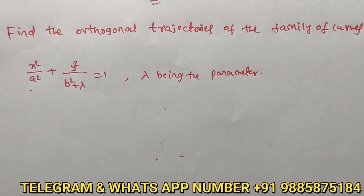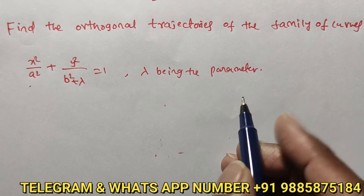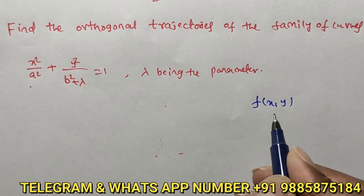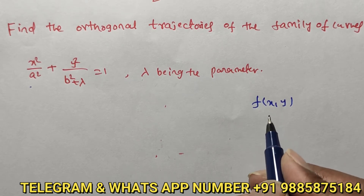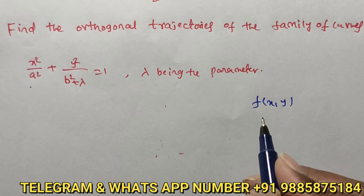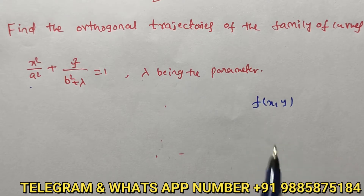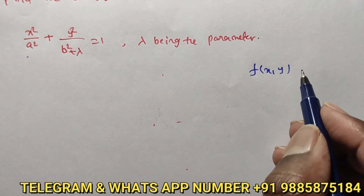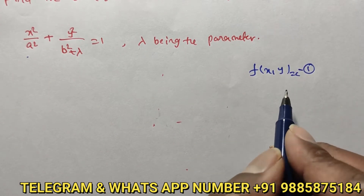By observation, the given problem is in terms of f(x, y), meaning it is a function of x and y — so it is in Cartesian form. First we are going to discuss how to find the orthogonal trajectory in the Cartesian form. We consider the given equation as equation number 1.